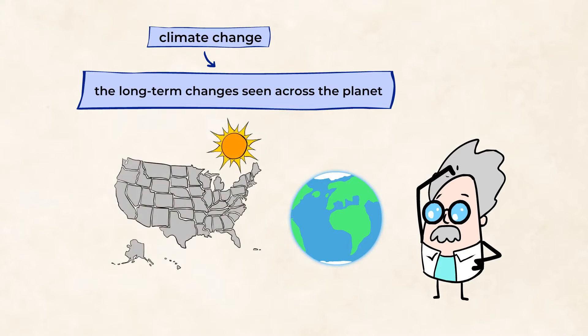Global climate refers to the long-term changes seen across the planet. So if the United States is no longer covered in ice, it must have warmed up, right?